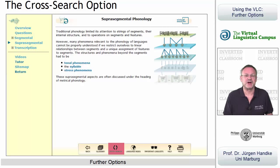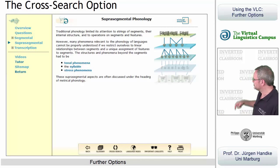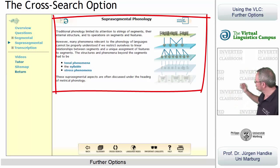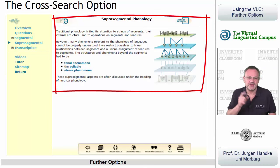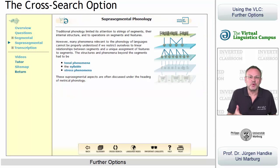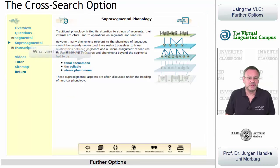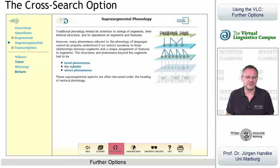Here is an example. Let's assume you are in the virtual session of the unit Phonology, and you are currently studying the content on the screen supra-segmental phonology. But now you want to find out more than what is presented here — for example, more about tone languages. This is where the cross-search option may help.